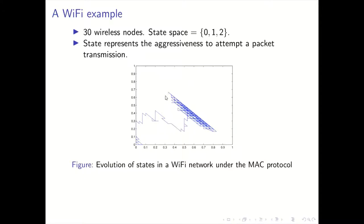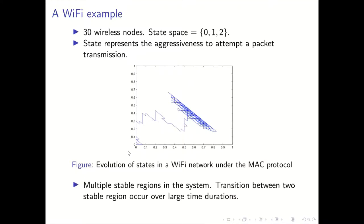In this example, we start the system somewhere here. We see that for a very long time, the system essentially remains in the neighborhood of this good equilibrium. But eventually, it transits from this good equilibrium to the bad equilibrium. Essentially, there are multiple regions of operation, multiple stable regions of operation in the system. A transition from one region to another region occurs very rarely and it occurs over a very long duration of time.